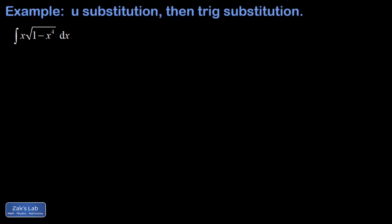We start out looking inside the square root and notice we'd like something squared rather than something to the fourth. We can rewrite it that way because x to the fourth is just x-squared squared. So the plan is to let u equal x-squared, which gives us the right form — 1 minus u-squared — to use a trig identity inside that square root.